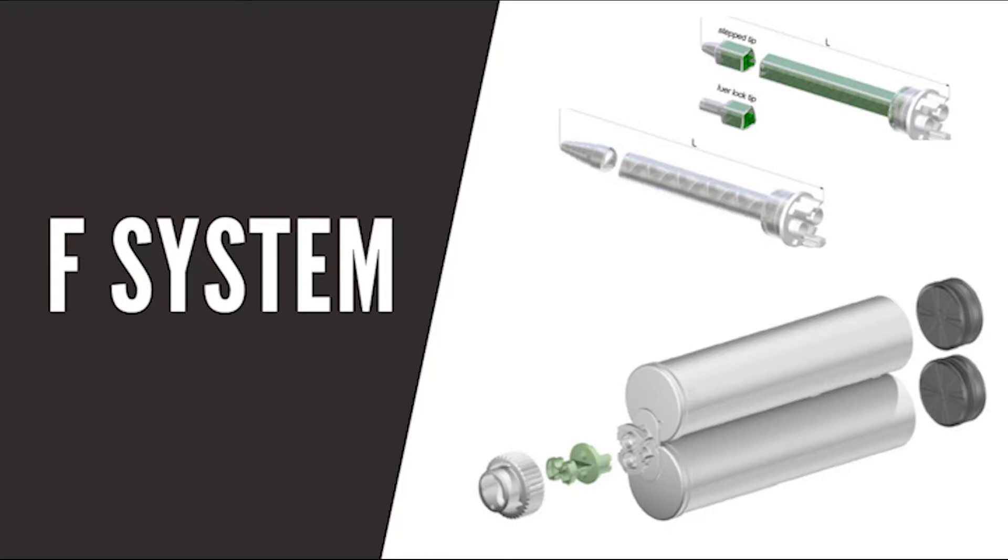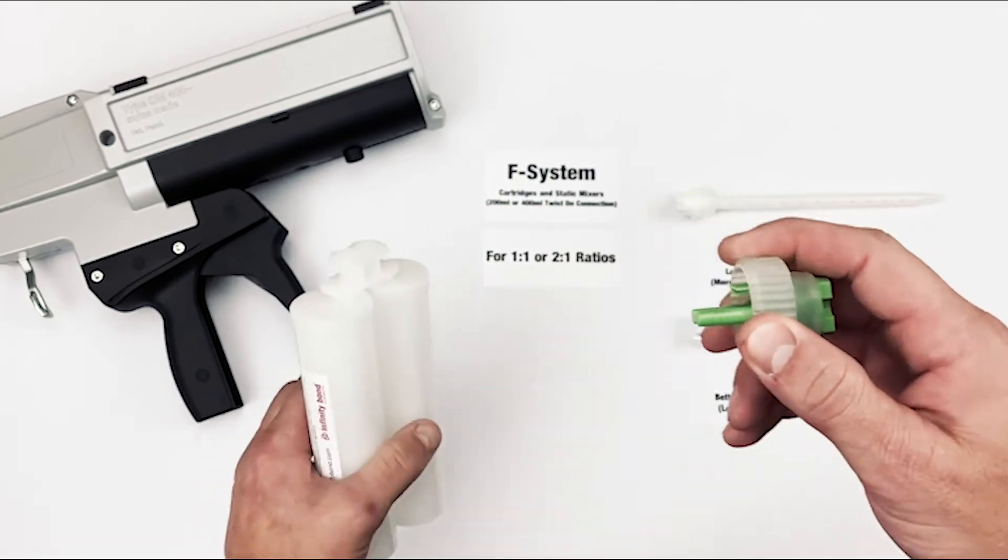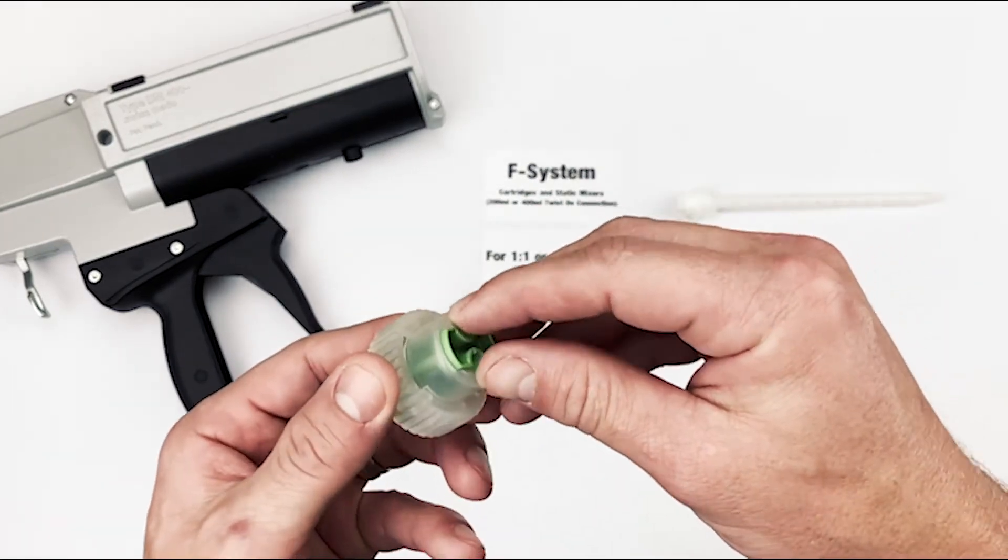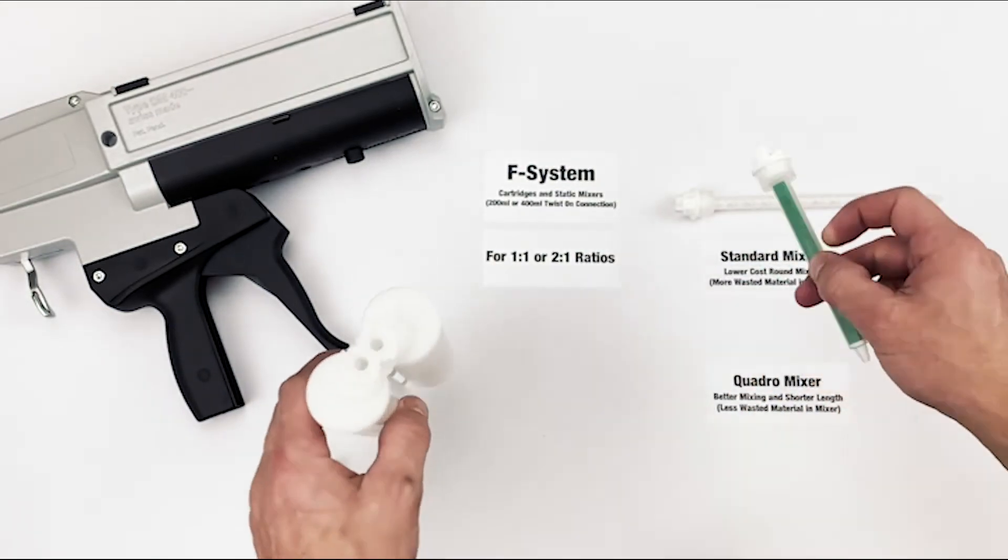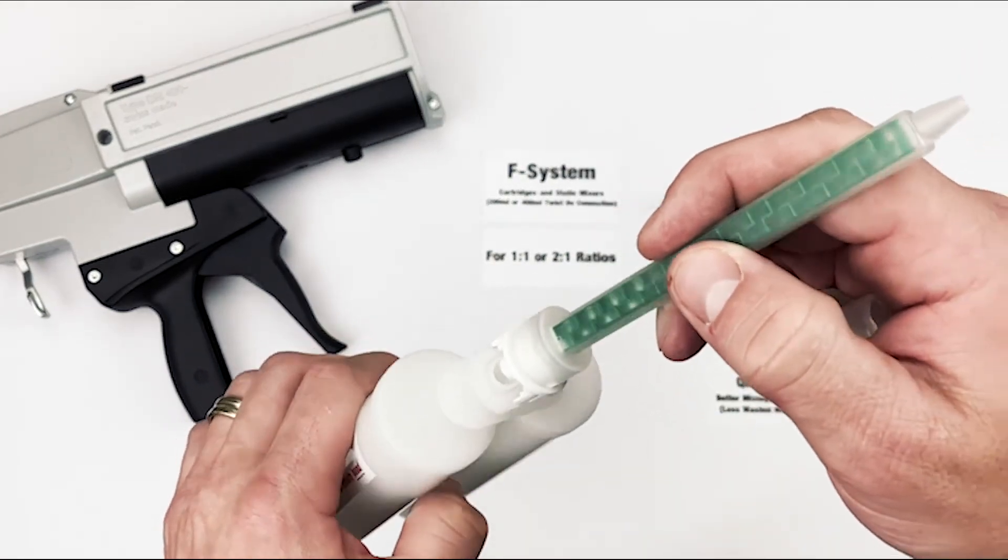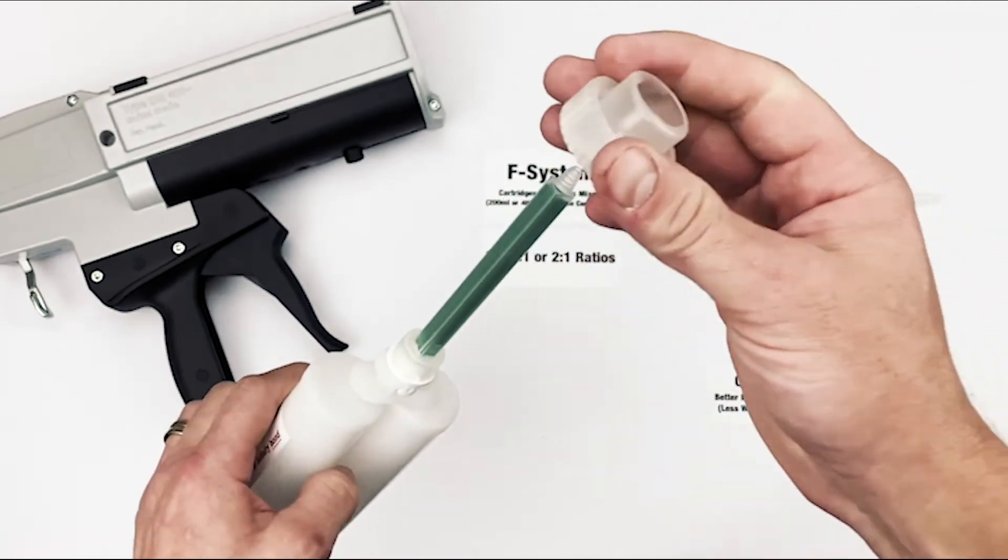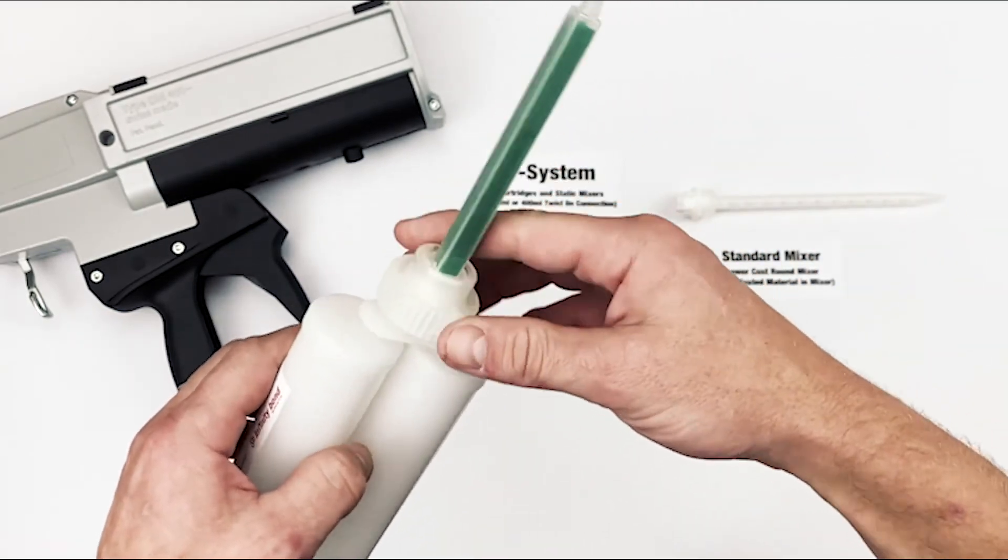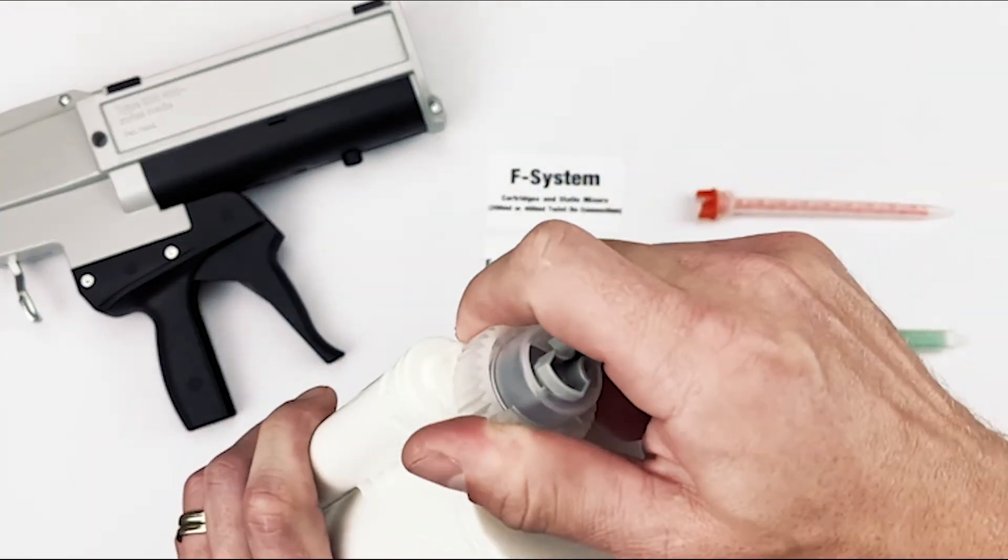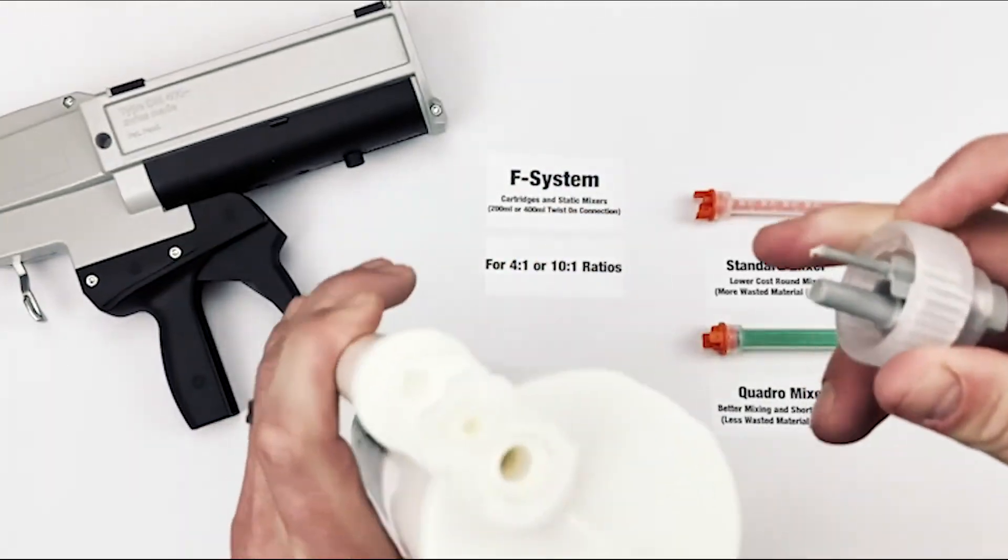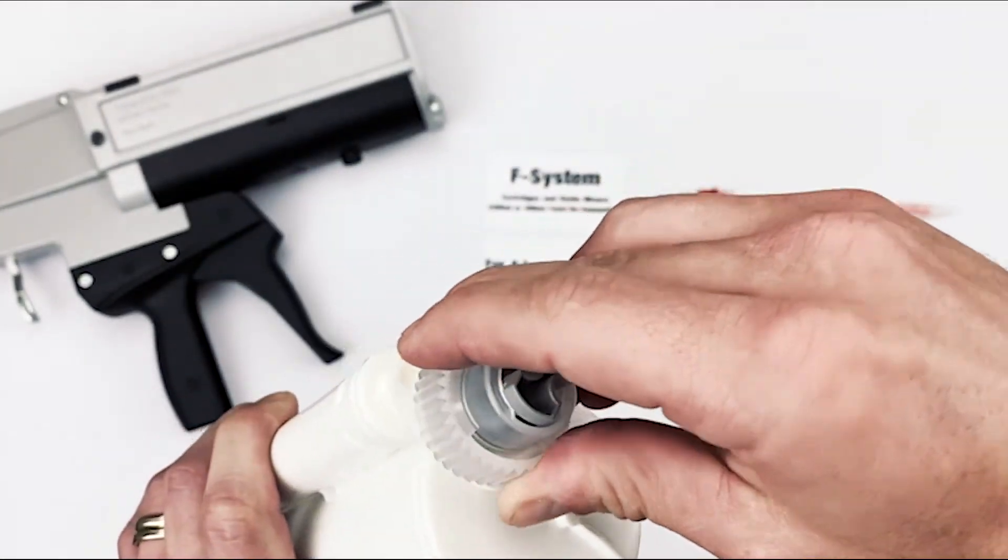F-System Static Mixers work very similarly to the B-System Static Mixers, only for 200 or 400ml cartridges. They provide separate ports for parts A and B to eliminate the possibility of material curing in the cartridge and are available in Standard and Quadro configurations. If you are dispensing a 4 to 1 or 10 to 1 ratio adhesive in a 200 or 400ml cartridge, you will want to use an F-System mixer and cartridge.